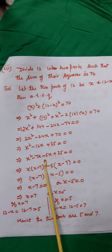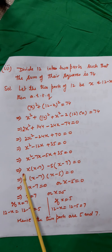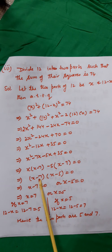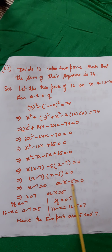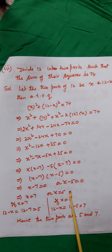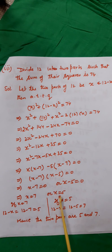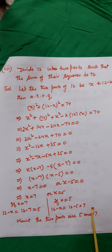So x² − 7x − 5x + 35 = 0, giving x(x−7) − 5(x−7) = 0, which implies (x−7)(x−5) = 0. Therefore x = 7 or x = 5. We cannot stop here; we must find both parts. If x = 7, the other part is 12 − 7 = 5. If x = 5, the other part is 12 − 5 = 7. Hence the two required parts of 12 are 5 and 7.